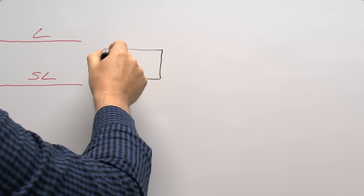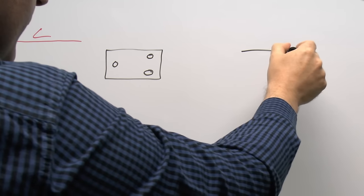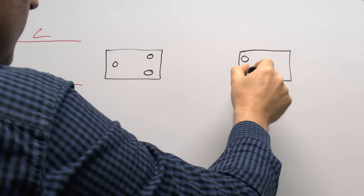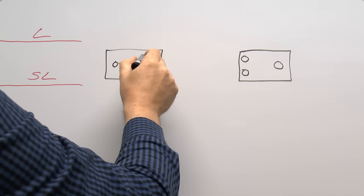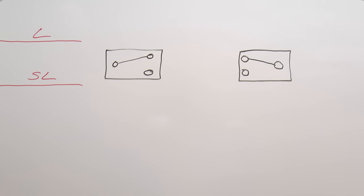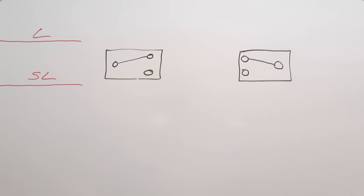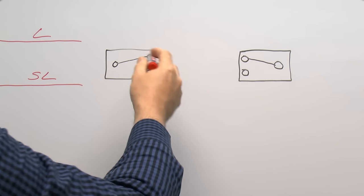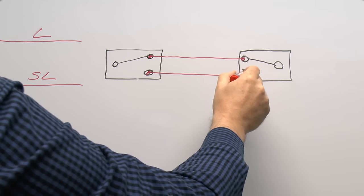For two separate switches, both switches need to be of the two-way variety with three terminals each. In the conduit type installation with individual wires, the two middle terminals of each switch are connected together with two wires running between the switches. The line comes in from the fuse box straight into the common terminal on the first switch, and the switched line goes from the common terminal of the second switch back to the light itself.